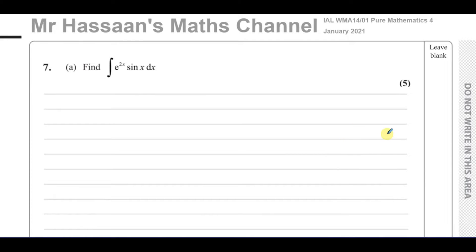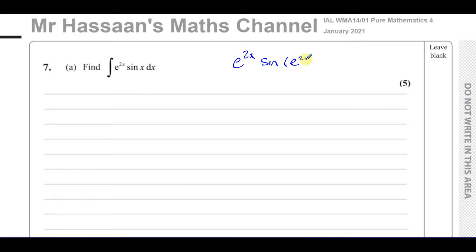Before I start — the question didn't tell us to use integration by parts, so how do I know I have to use it here? Can I use some sort of substitution? Normally substitution can be used when you have a function inside another function. Reverse chain rule can be used if you have something multiplying another function where that thing is the differential of what's inside that function. For example, something like e to the power of 2x times the sine of e to the power of 2x plus 1.